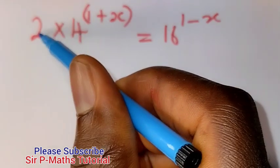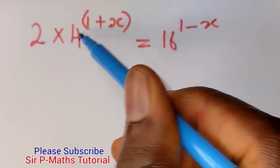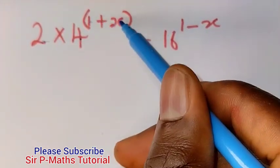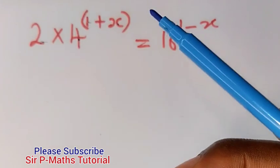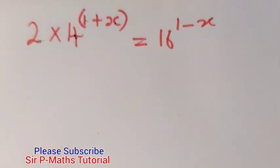Now don't be tempted to multiply 2 and 4 because they can be multiplied. This 4 has a power of unknown, 1 plus x. x is a variable. So the power is unknown. So the first thing I will do is to reduce 4 and 16 to the base of 2.